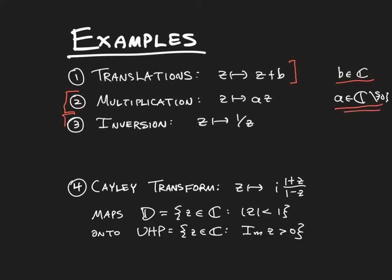We also have inversion, which fits under the previous setup because we can write this as 0z plus 1 over 1z plus 0. Notice here that we do have to restrict the domain to be non-zero z's.